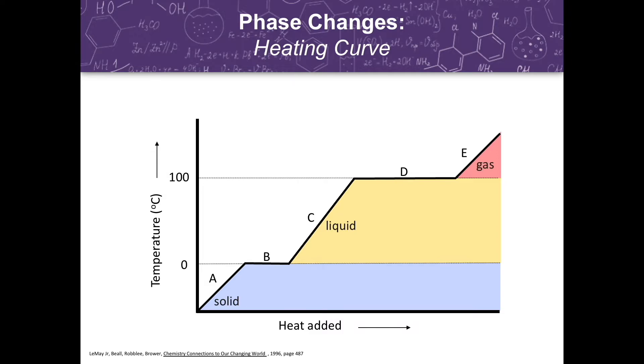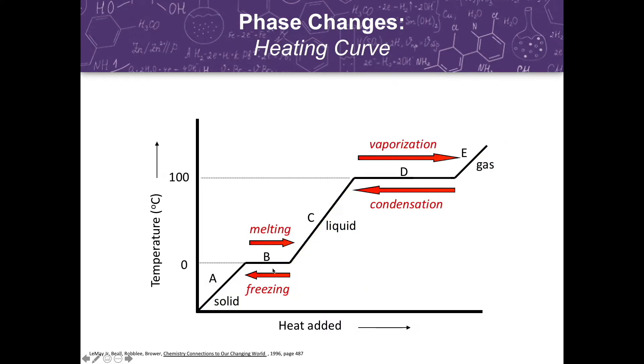Each diagonal line in the heating curve corresponds to the presence of a single phase, either solid, liquid, or gas. While the horizontal lines represent the phase changes, either from solid to liquid, liquid to gas, gas to liquid, or liquid to solid. Here are the different phase changes that we talked about earlier.